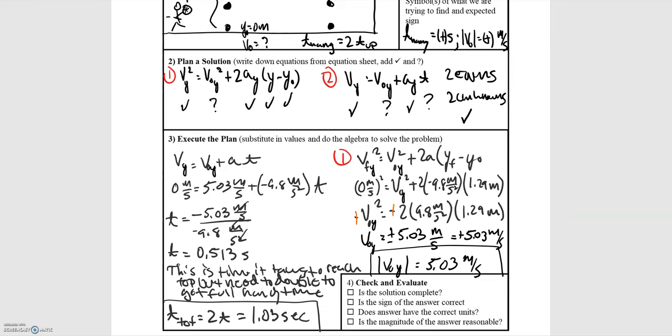After solving for the initial velocity, we can use the velocity as a function of time equation, which is equation two, to be able to solve for the time that it takes to go up. Substituting everything in, we find that that time is roughly half a second, but that is the time that it takes for Michael Jordan just to reach his maximum height. We want the total hang time, so that's twice the time that it takes to go up as we previously discussed, and that's equal to 1.03 seconds for a hang time.